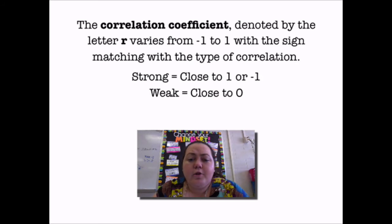The correlation coefficient, denoted by the letter R, varies from any number between negative 1 and 1 with the signs matching which type of correlation. If it's a negative correlation, meaning it's going down, it's going to have a negative correlation coefficient. If it's a positive correlation, the points are going up, it's going to have a positive correlation coefficient.